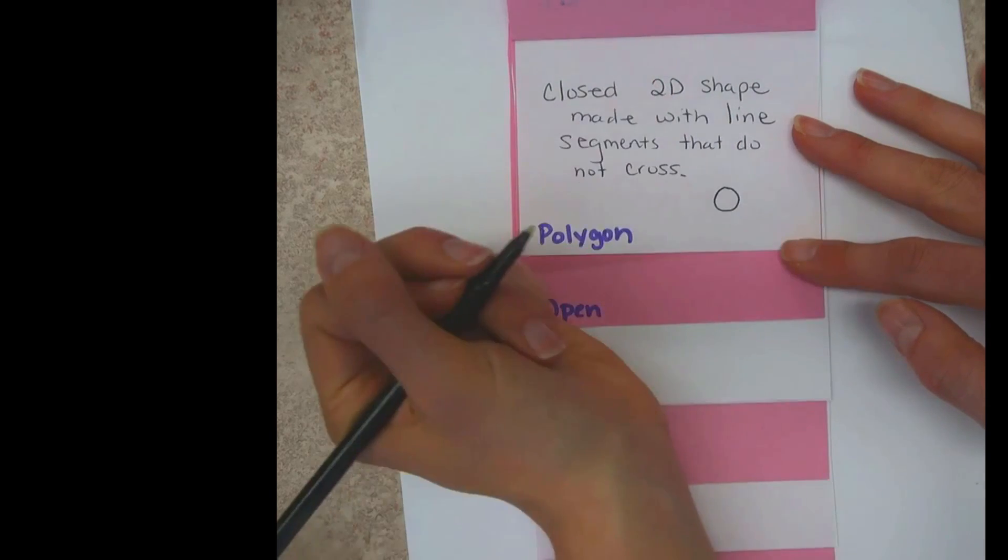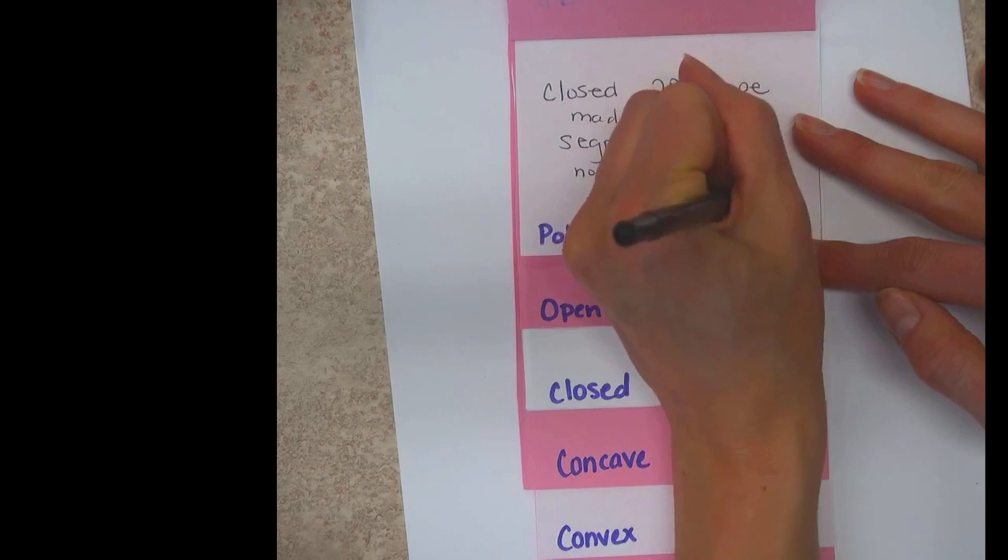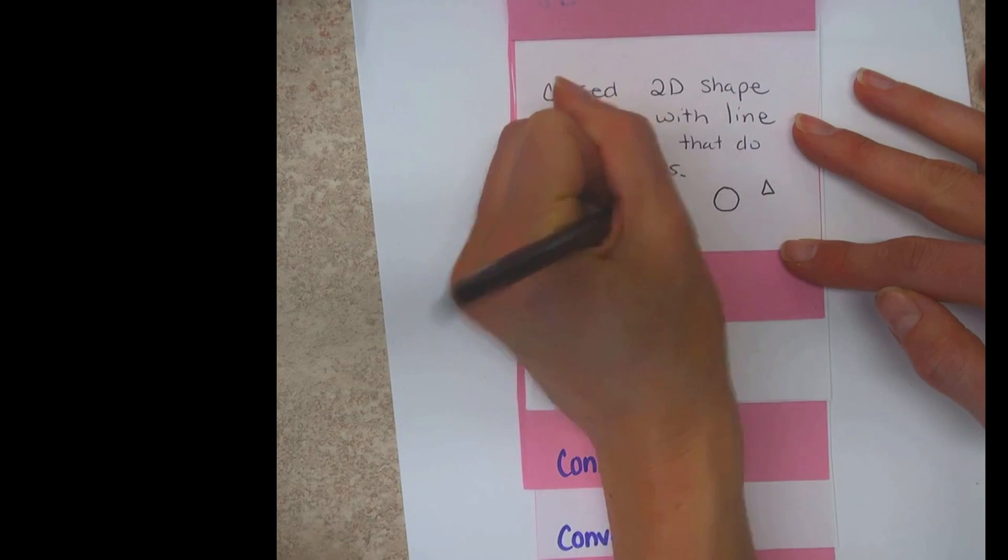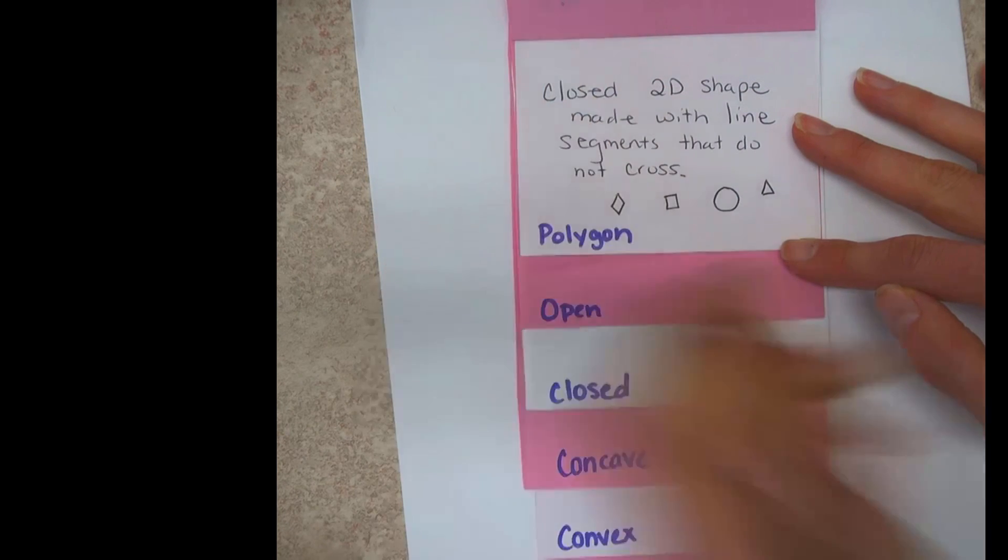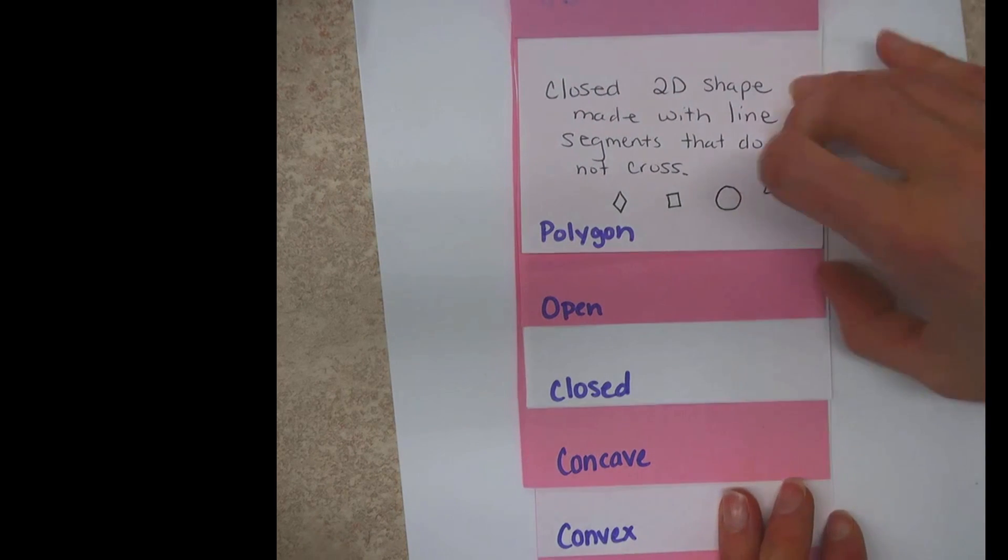A closed two-dimensional shape with line segments that do not cross each other. So a circle? A triangle? Any of the ones you're talking about so far would count. A diamond? Those are just a few. You get the idea?